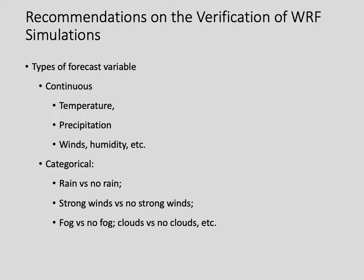For the verification of WRF simulations, we focus on two types of forecast variables: continuous variables and categorical variables. Continuous variables have values from both WRF simulations and observations — temperature, precipitation, wind speed, and wind direction are typical examples. Categorical variables usually refer to the occurrence of a specific event, such as precipitation vs. no precipitation, strong winds vs. no strong winds, fog vs. no fog. Verification of continuous and categorical variables are different.